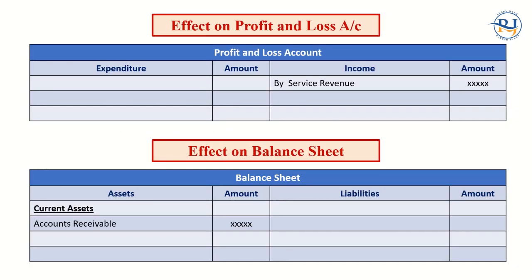The effect of this transaction on the profit and loss account — also known as the income and expenditure account — is that service revenue will appear on the income side, meaning the credit side of the income and expenditure account. On the other side, the effect on the balance sheet is that accounts receivable will come under current assets on the asset side of the balance sheet.